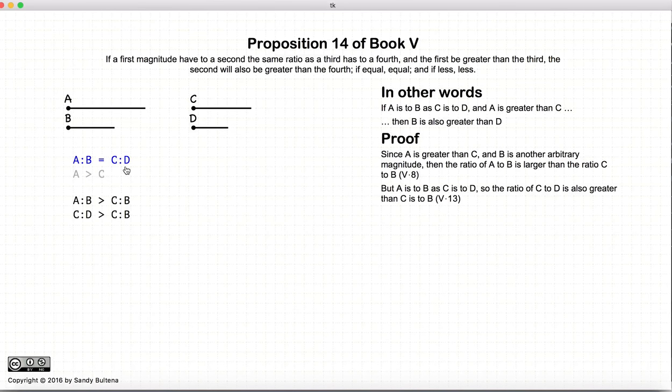But a to b is equal to c to d. So we take a to b and we replace it with c to d. So c to d is greater than c to b. And we know that we can do this by Proposition 13.